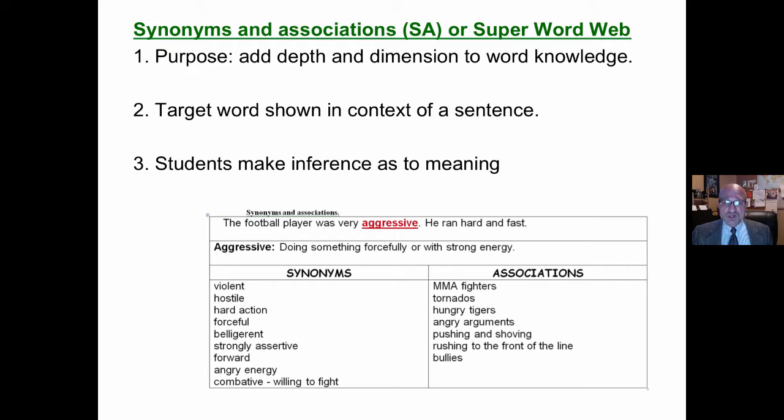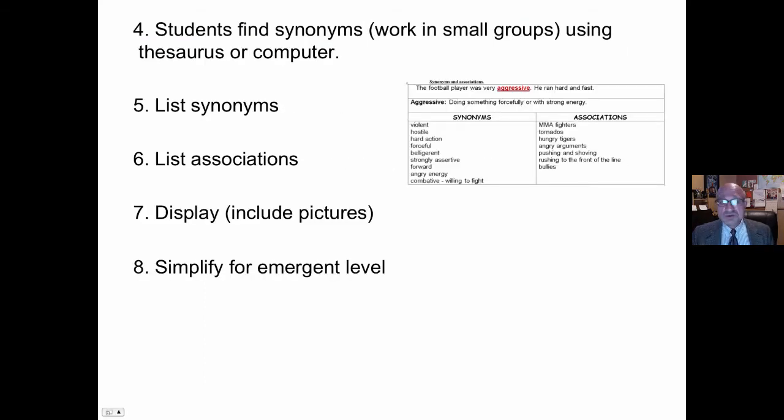First, the target word is shown in the context of the sentence. Students then make inferences as to the meaning. The football player was very aggressive, he ran hard and fast. So, you are reinforcing the use of context or the semantic cueing system.